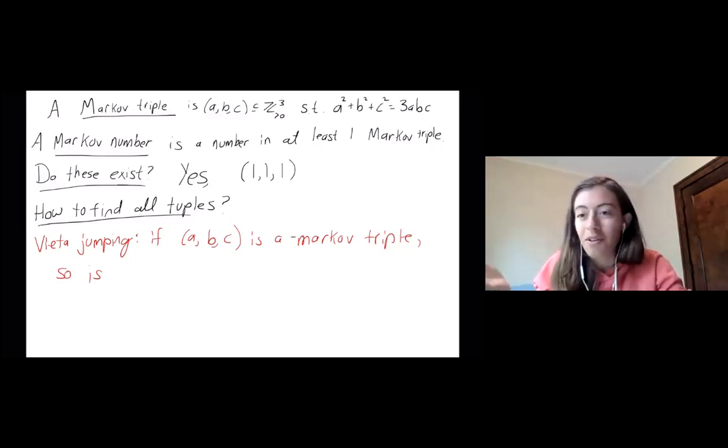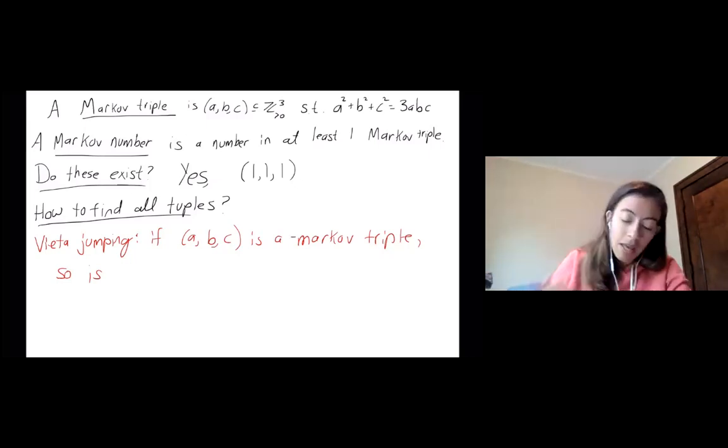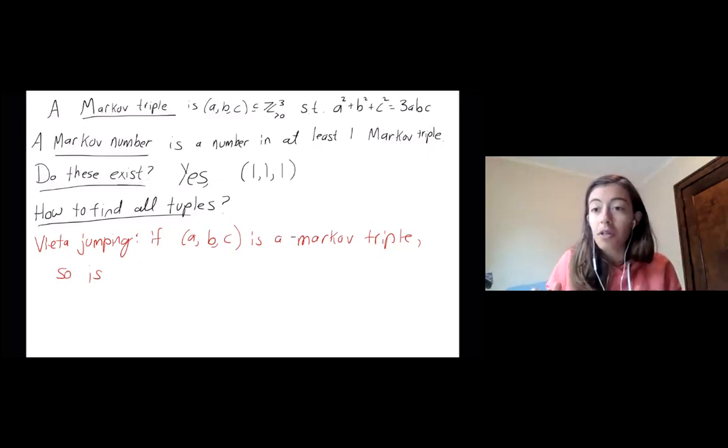We can check very easily that that satisfies it. So then, okay, we found one, are there more? And again, as we heard in the last talk, but we'll just do it specifically for the Markov numbers, given a tuple, there's a way to cook up more tuples.